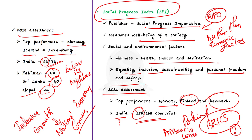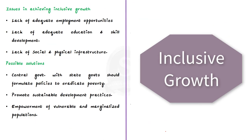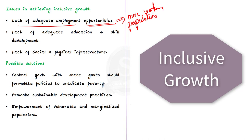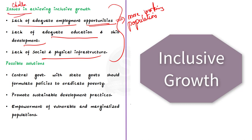So far we have seen what inclusive growth is and how technological advancement is creating inclusive growth, and how inclusive growth is measured using these two indices. Now let me tell you what issues are prevalent in achieving this inclusive growth. In India, the major challenges include lack of adequate employment opportunities despite India having the largest working population, lack of adequate education and skill development, and lack of social and physical infrastructure. These are all major challenges for achieving inclusive growth.